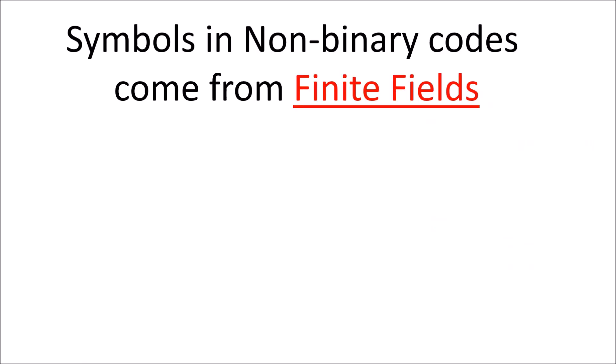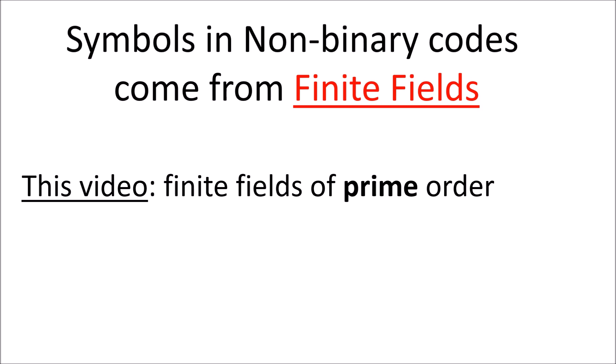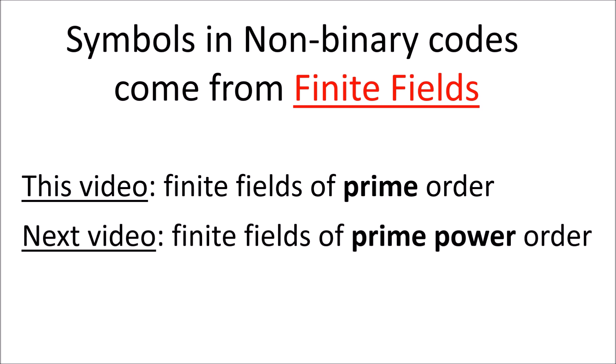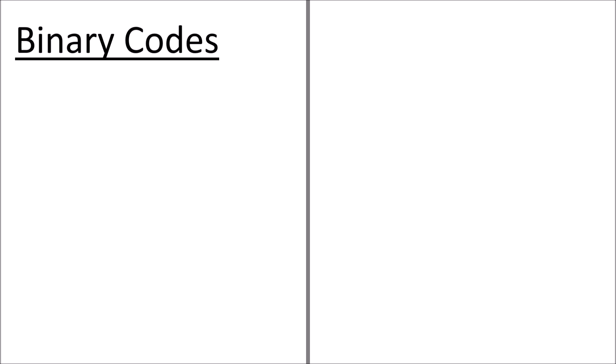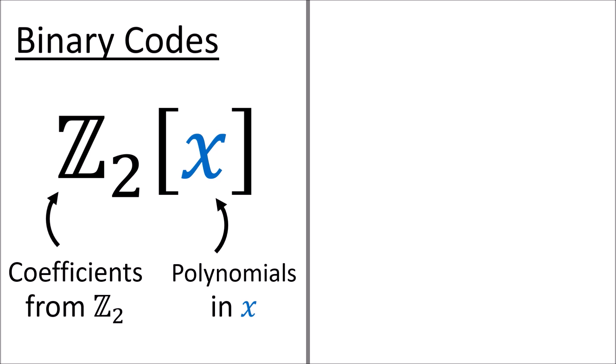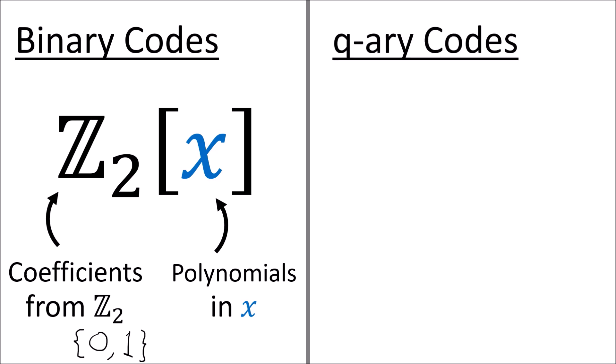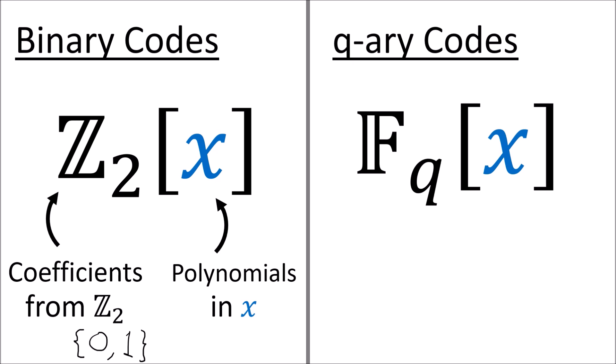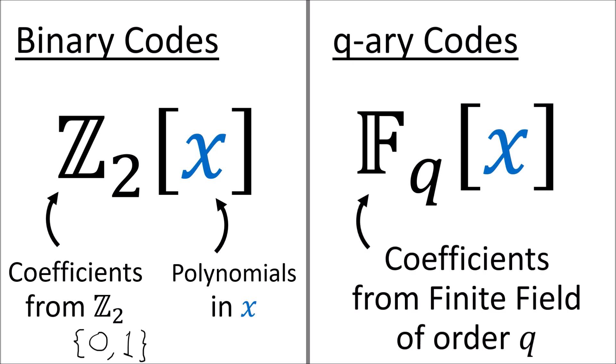The symbols in non-binary codewords are members of special sets called finite fields. In this video, we're going to discuss finite fields with orders that are prime, and in the next video we'll discuss finite fields with orders that are prime powers. When learning about binary codes, we made messages and codewords out of polynomials from the integers mod 2 adjoin x — polynomials in the x variable with coefficients from the integers mod 2, so the coefficients would just be 0s and 1s. For non-binary codes, we're going to study q-ary codes: polynomials in the x variable with coefficients from the finite field of order q. When I say a field has order q, I just mean that the field has q members, so a field of order 7 has 7 members.